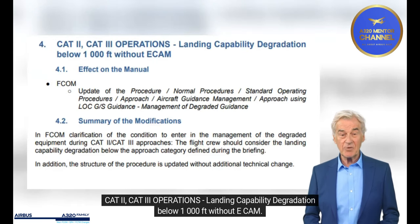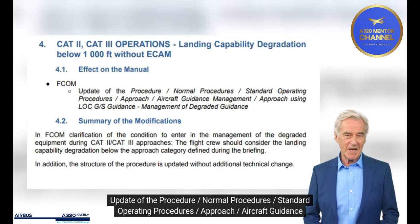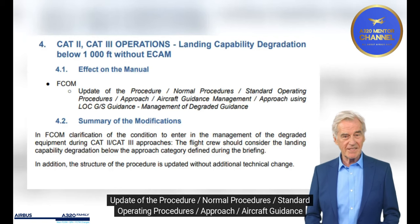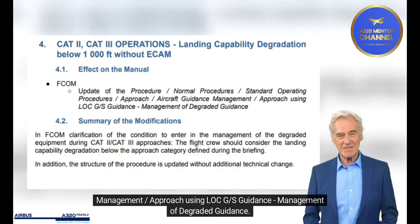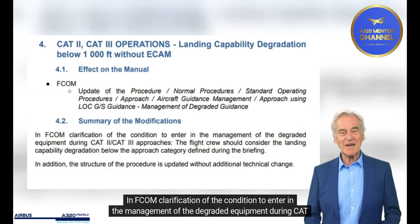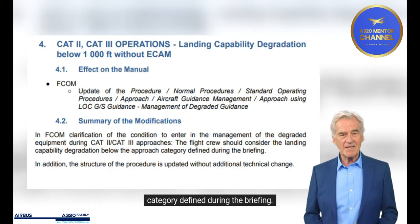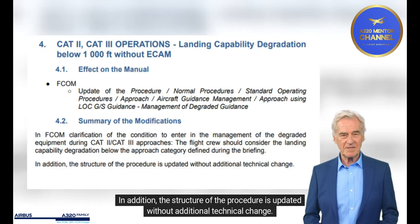CAT 2, CAT 3 Operations — Landing Capability Degradation Below 1,000 Feet Without a CAM. Effect on the Manual. Update of the Procedure: Normal Procedures, SOP, Approach, Aircraft Guidance Management, Approach Using LOC-GS Guidance, Management of Degraded Guidance. Summary of the Modifications: In FCOM, clarification of the condition to enter in the management of the degraded equipment during CAT 2, CAT 3 approaches — the flight crew should consider the landing capability degradation below the approach category defined during the briefing. In addition, the structure of the procedure is updated without additional technical change.